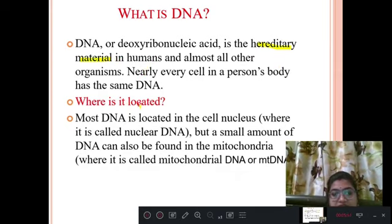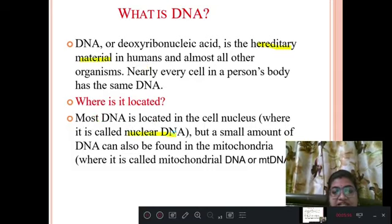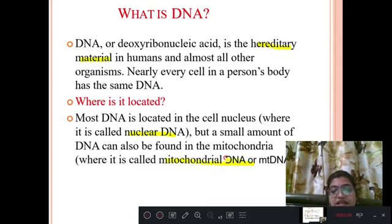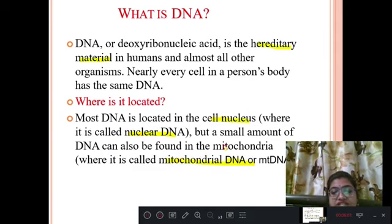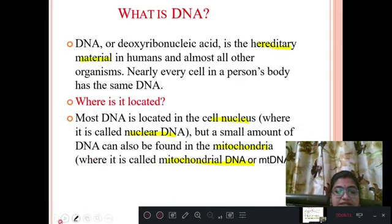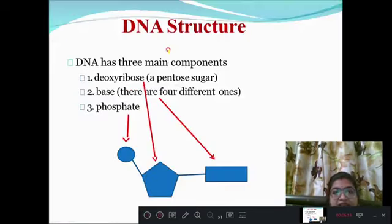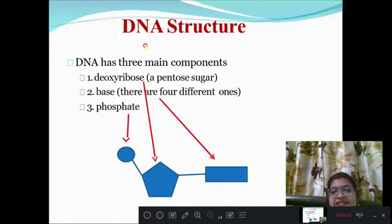Where is DNA located? DNA is mainly of two types: nuclear DNA and mitochondrial DNA. The DNA found inside the nucleus is known as nuclear DNA, and the DNA found inside the mitochondria is known as mitochondrial DNA. Next comes the DNA structure.